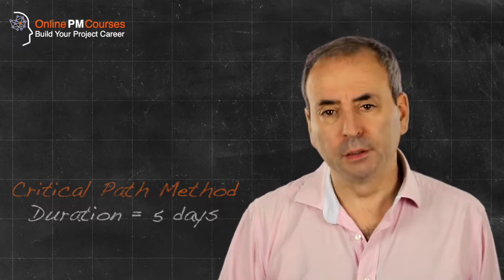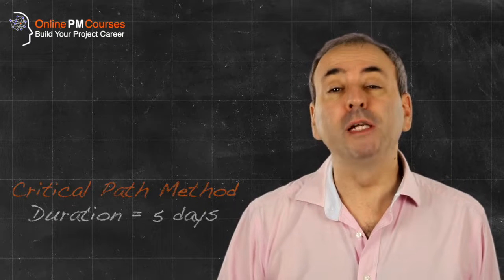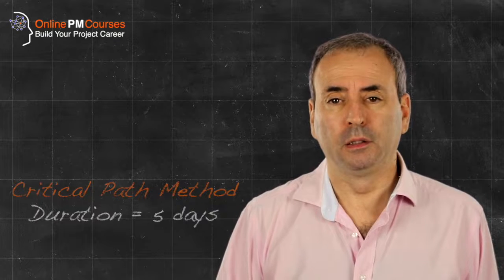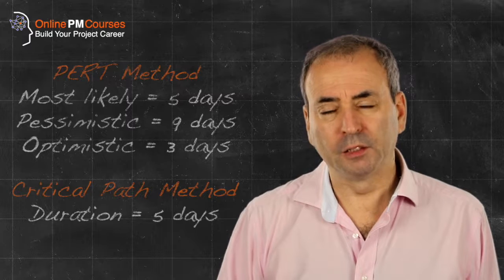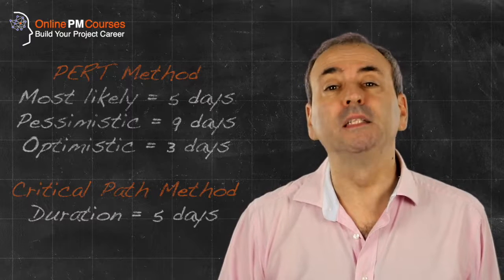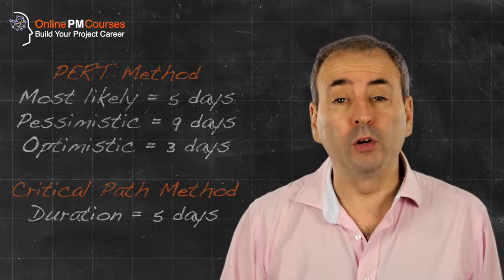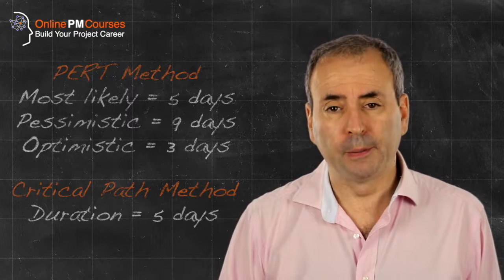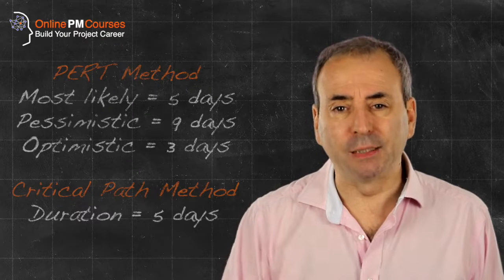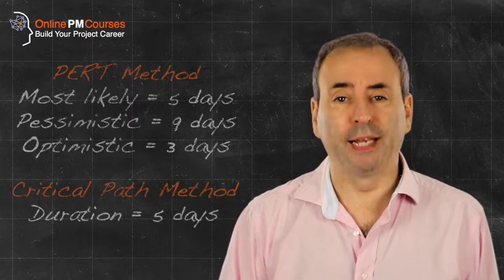In PERT we actually use a three point estimate for every duration. So we estimate what we consider to be the most likely duration, which is the estimate that would have gone into the critical path method. But we also make a pessimistic estimate and an optimistic estimate.